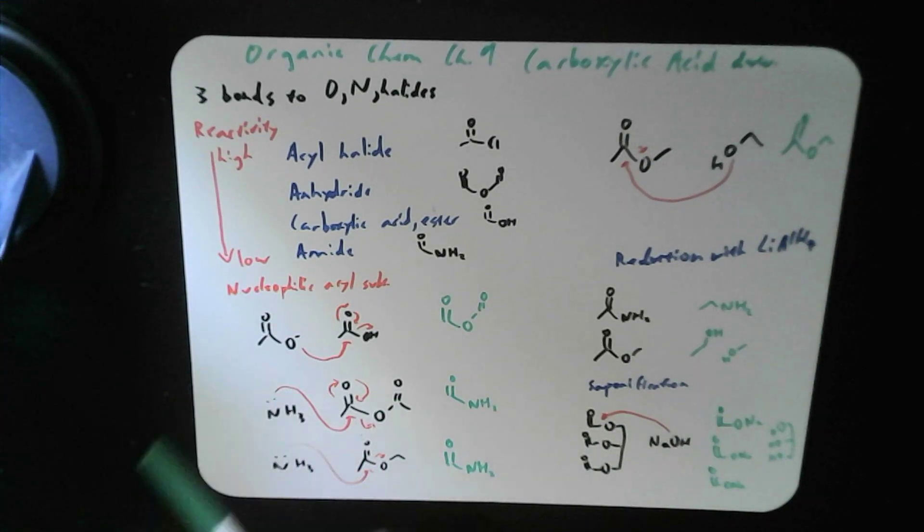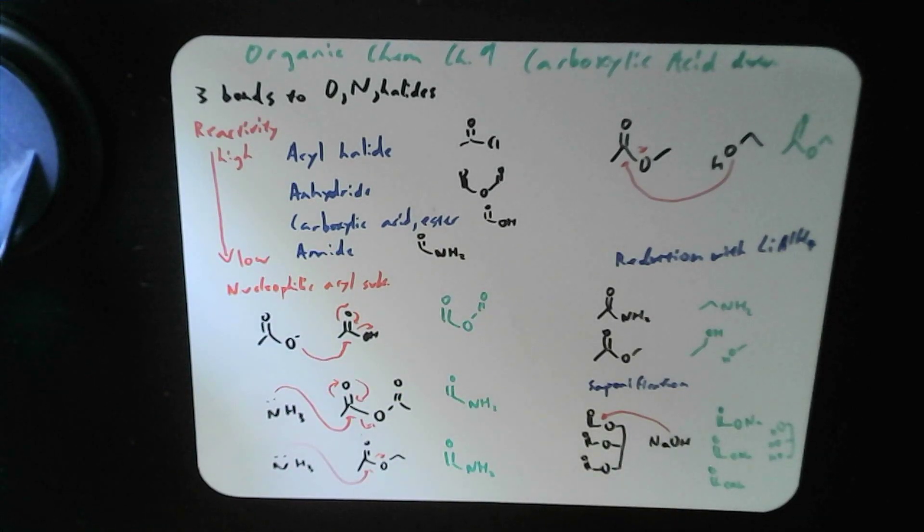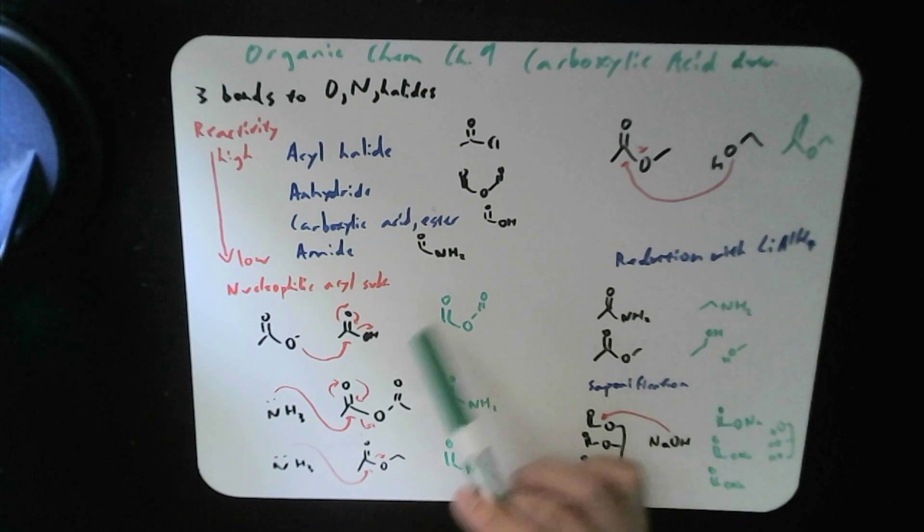What we have here is nucleophilic acyl substitution. Very easy, you simply just substitute one into another using one of the deprotonated carboxylic acid hydroxides as the attacker, the nucleophile. And attack the central carbonyl carbon, causing formation of anhydride.